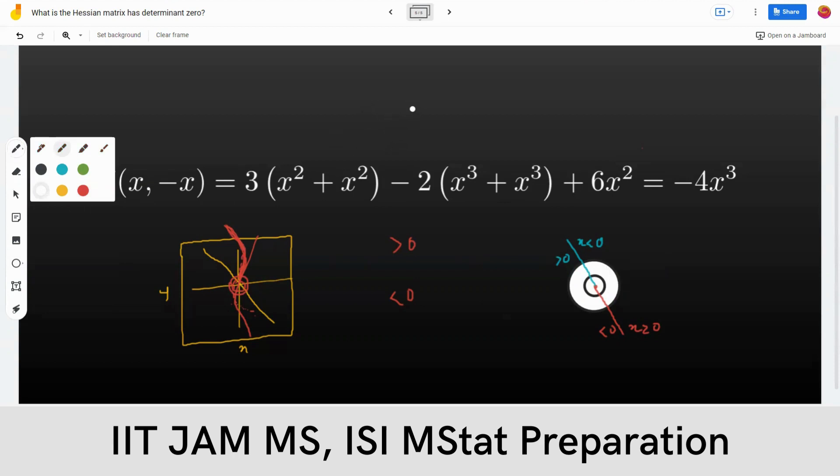So that means for an arbitrary interval around (0, 0), you get both positive and negative values. That means for an arbitrary interval around (0, 0), you get more than the function value of (0, 0) and less than the function value of (0, 0).